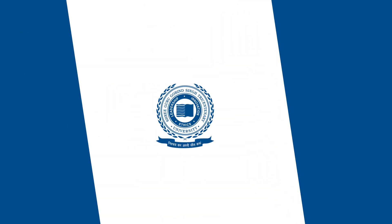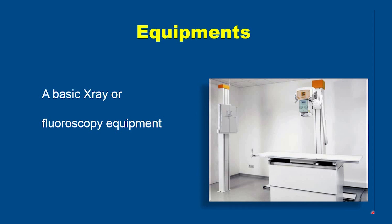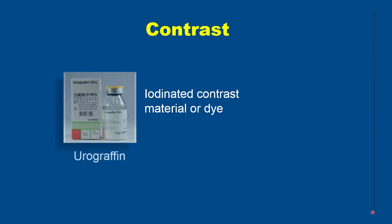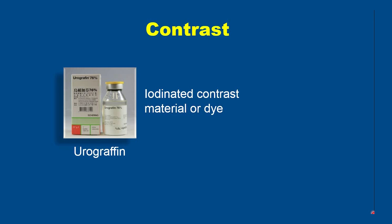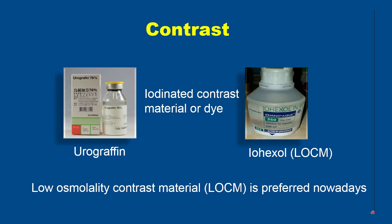The equipment needed for the study is a basic X-ray or fluoroscopy equipment plus a radiographic contrast material or dye. It is usually an iodinated contrast material; the two most commonly used are urographin, which is a high osmolality contrast material, and iohexol, a low osmolality contrast material. Low osmolality contrast materials are usually preferred nowadays as they have less chance of adverse reactions or contrast allergy.